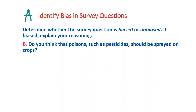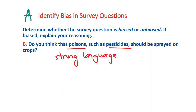Another example: 'Do you think that poisons, such as pesticides, should be sprayed on crops?' This is very biased because it uses strong language — calling pesticides 'poisons' — without letting you form your own thoughts. It's leading you to view pesticides negatively, drawing you into the idea that it is a bad thing. Poisons is a strong, negative word used to elicit strong reactions, pushing you to think pesticides are really bad.